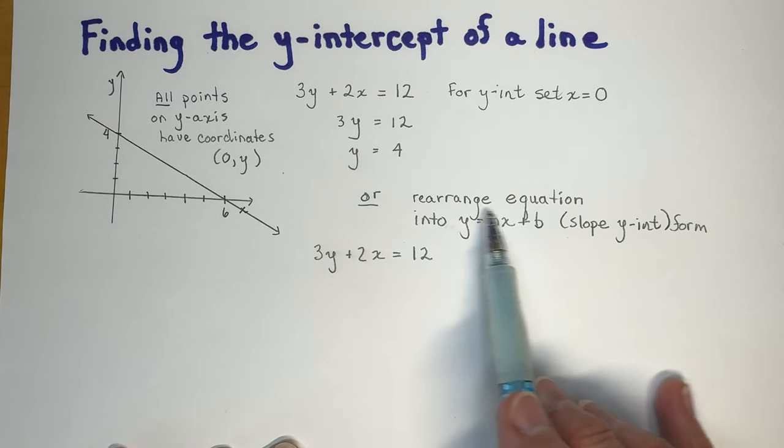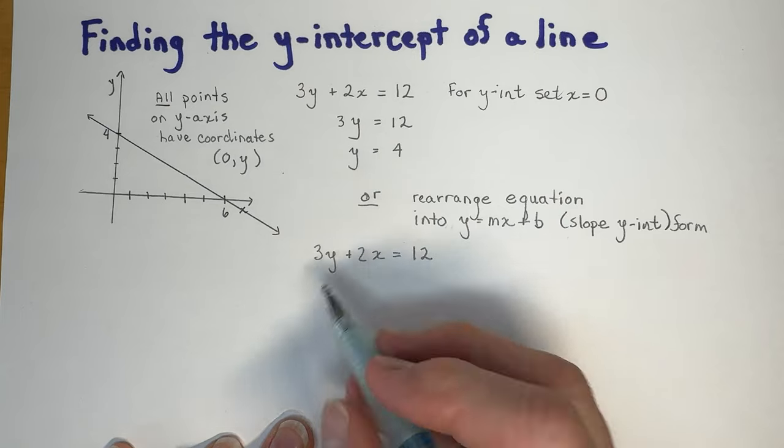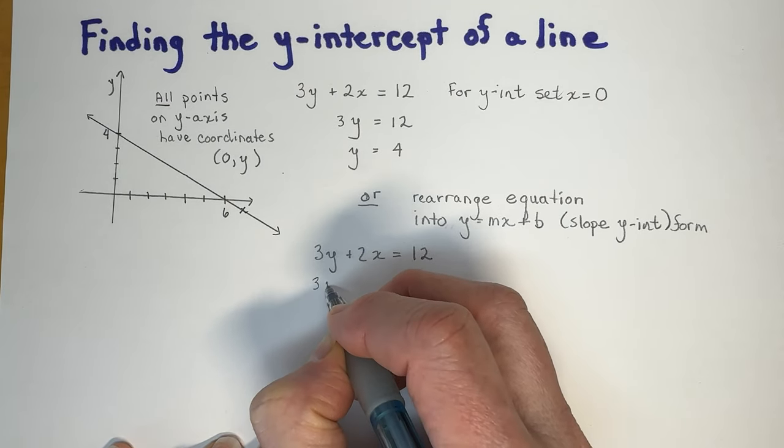The other option is to rearrange the equation into y equals mx plus b format, which is going to give you both the slope and the y-intercept.